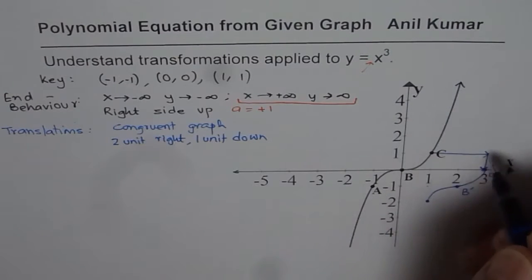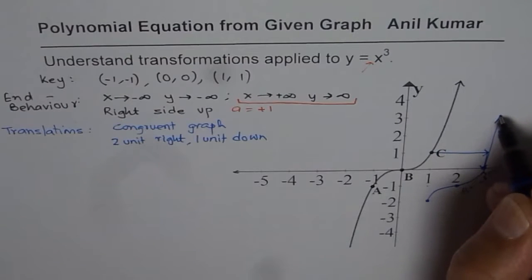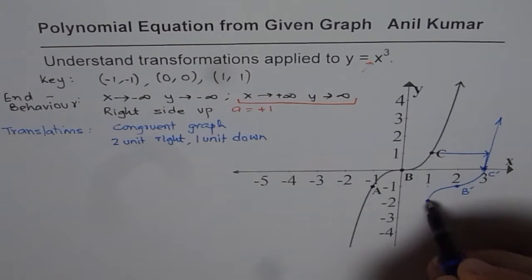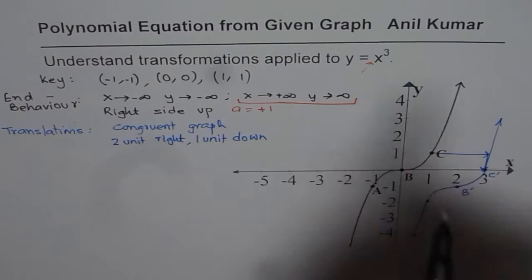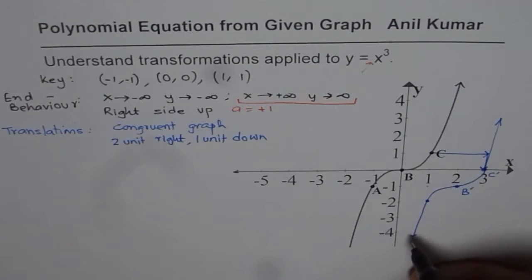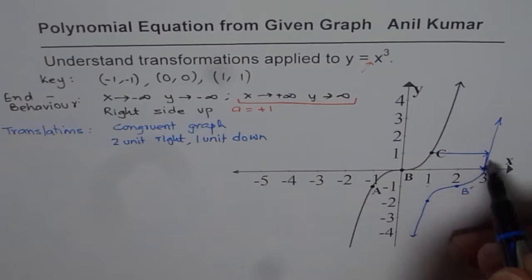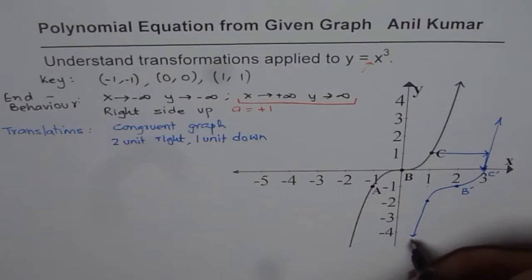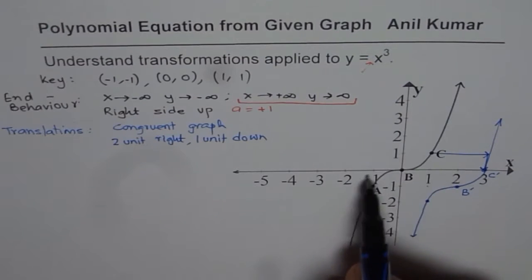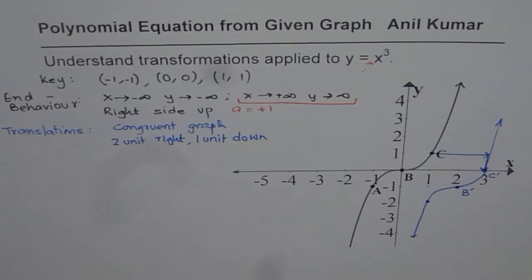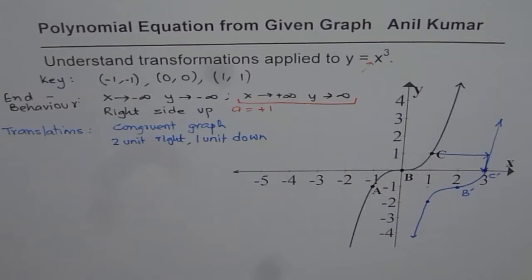The end behavior remains the same — right side up. Since it is an odd degree with a positive leading coefficient, we get opposite ends. If you translate the graph it overlaps, so they are exactly the same shape — congruent graphs.